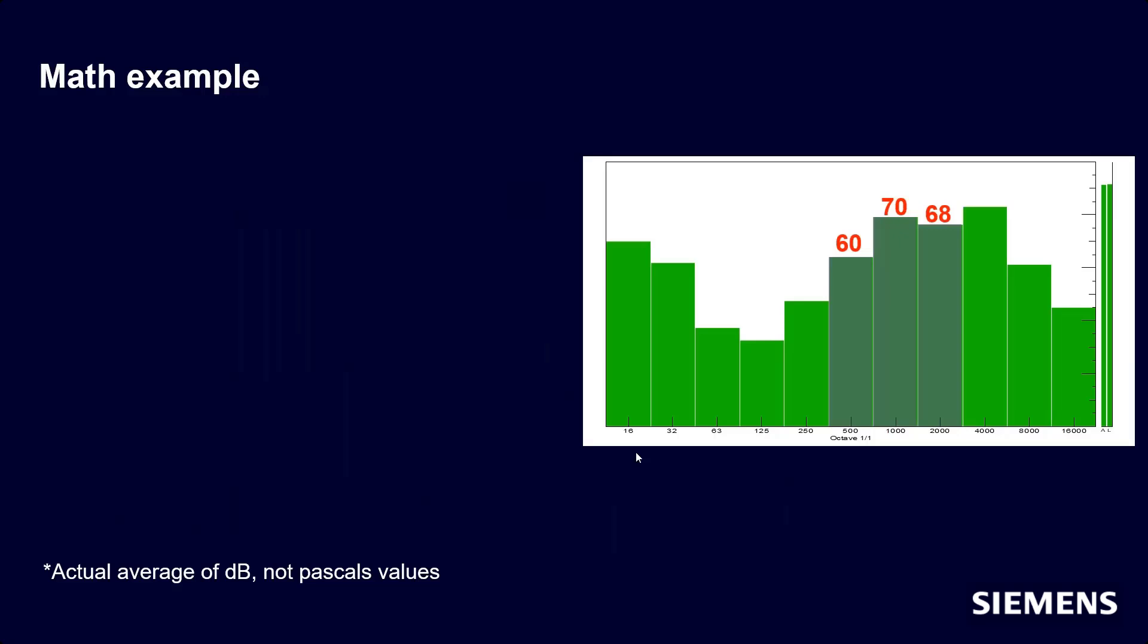A quick example. It's very easy to calculate. If I had three octave bands, 500, 1,000, and 2,000, I would just find the dB values at those, add them together, and divide by 3. So the PSIL for this exact example would be about 66 dB.